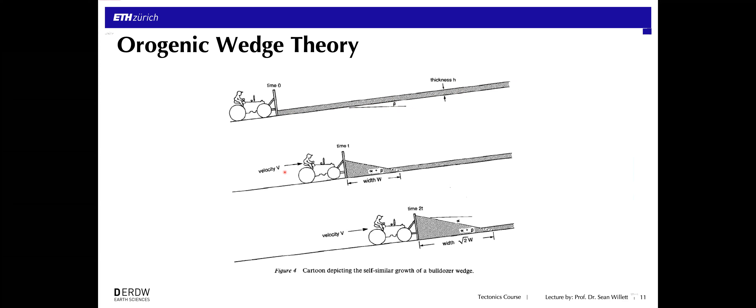As this bulldozer advances, it will begin to build up a wedge. The steepness of this wedge will depend on the mechanical strength of the material. The size of the wedge depends on how much mass is added — so with increasing time we see a larger wedge, but it isn't necessarily going to change its geometry.